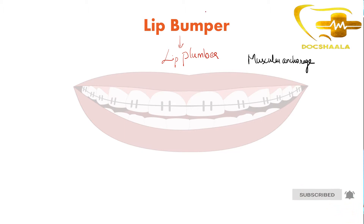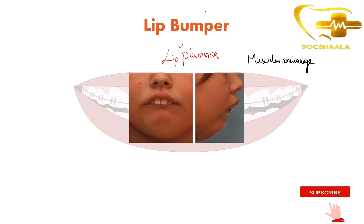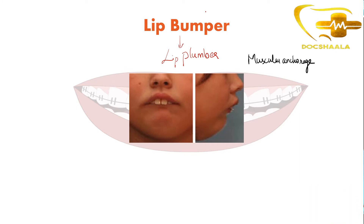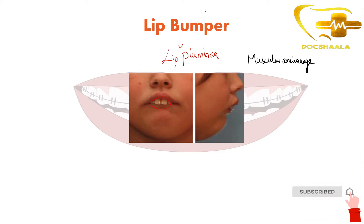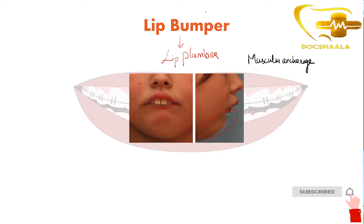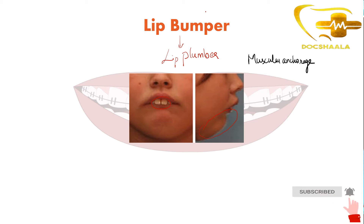Let us see how it looks like. Here you can appreciate the picture of a child with anterior incisors being in a fashion of overjet. The child is having a decreased growth of the mandible, and there is not an appropriate angle between the maxilla and the mandible, which is making protrusion of the incisors.